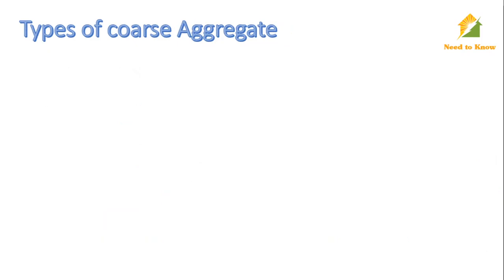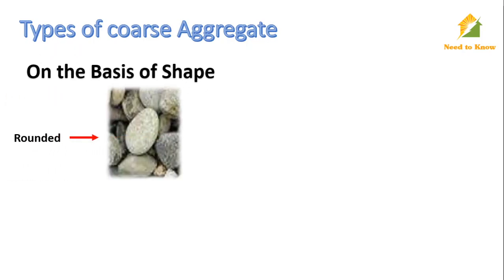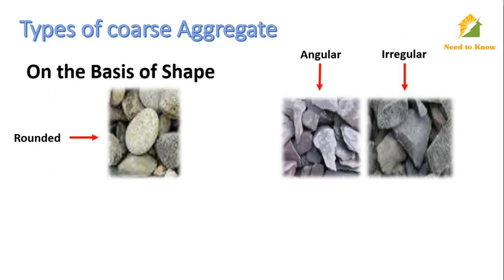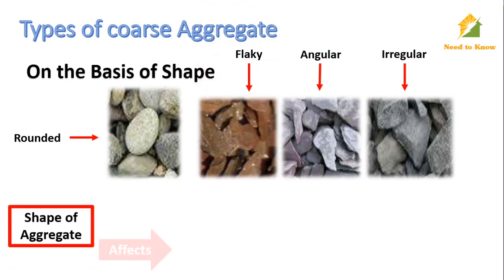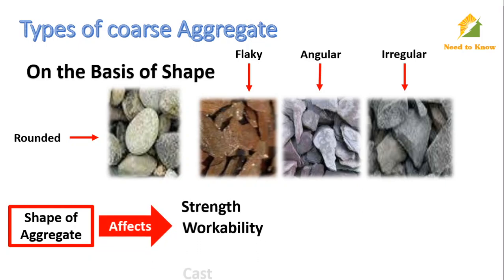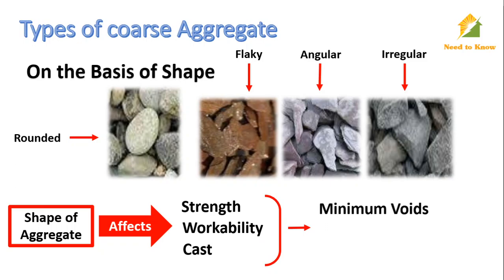On the basis of shape, coarse aggregates are classified as rounded, irregular, angular, and flaky. The shape of aggregate also affects strength, workability, and cost. To achieve good strength and workability economically, aggregate must be angular to maintain minimum voids, ensure reduction of paste, have good interlocking capacity, and produce good strength.